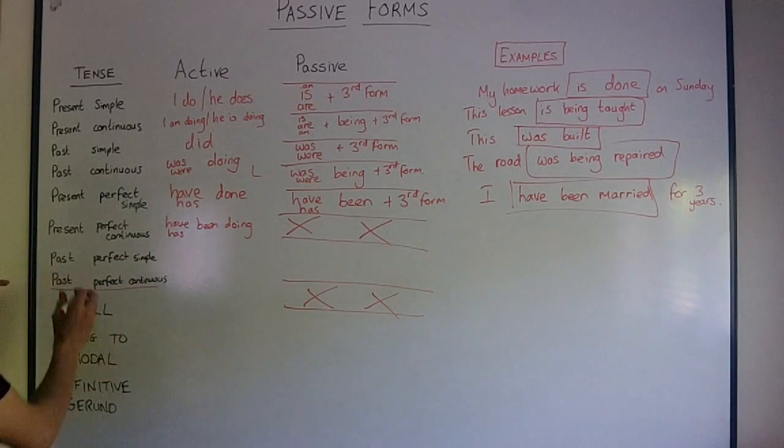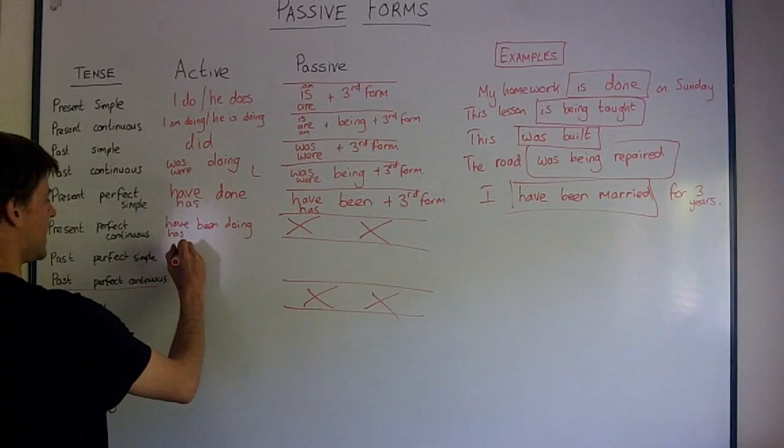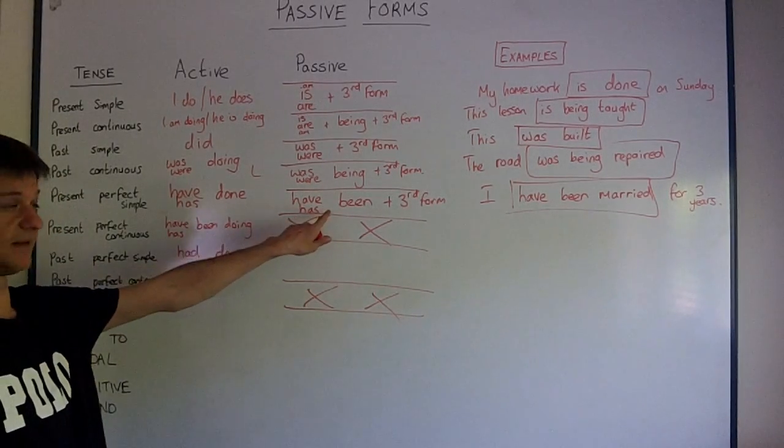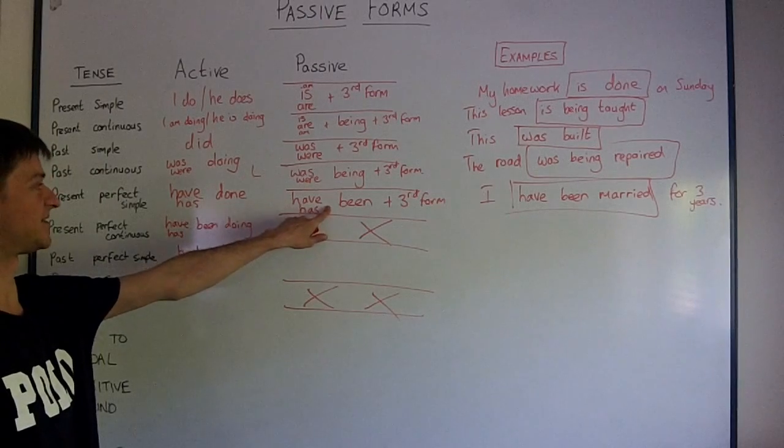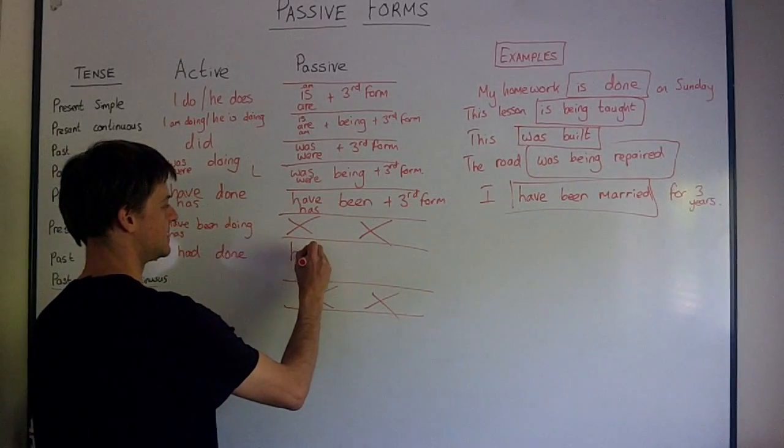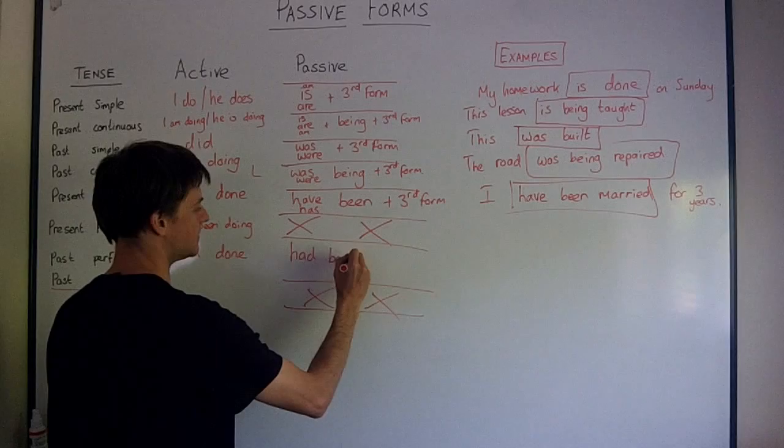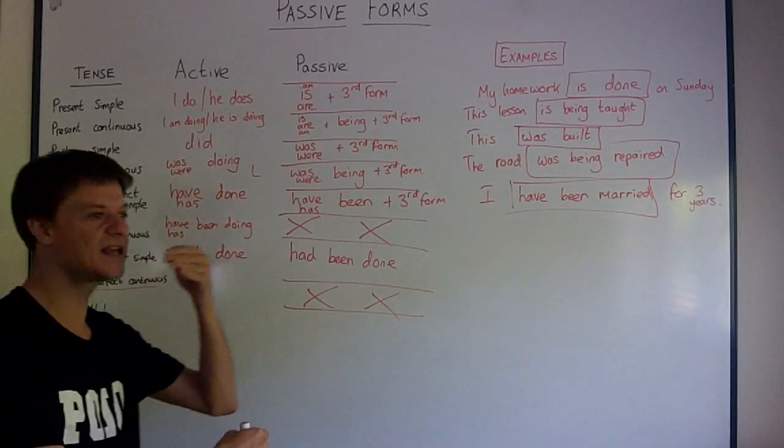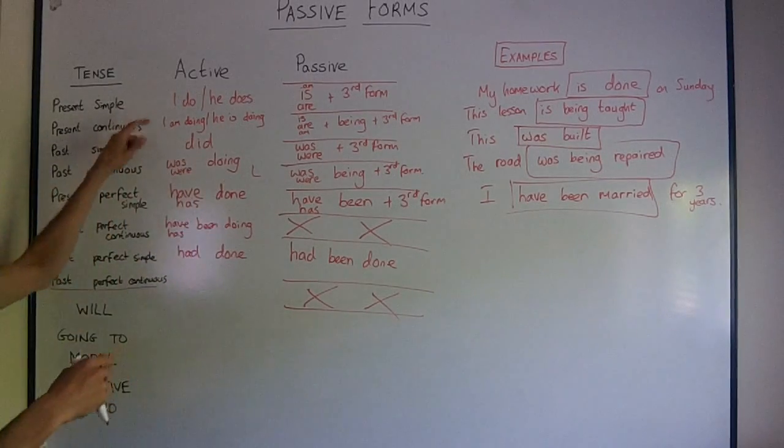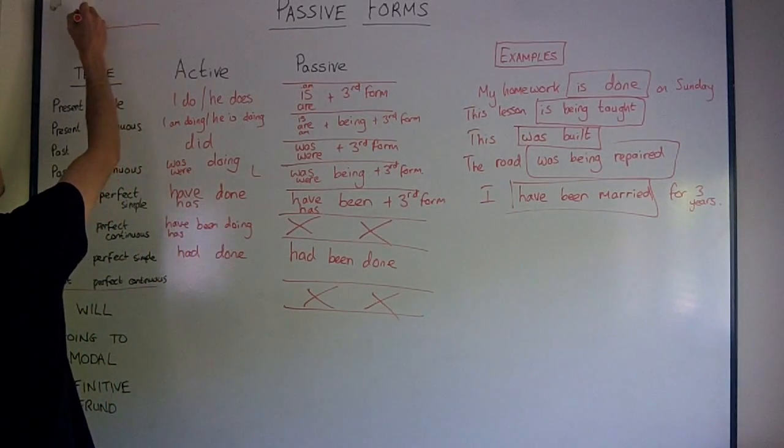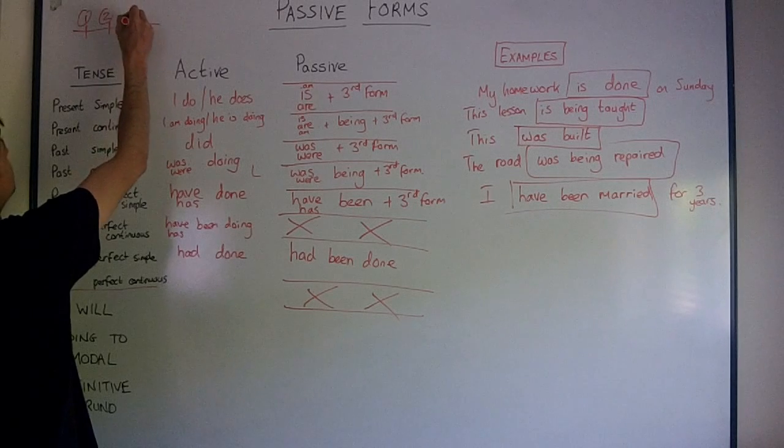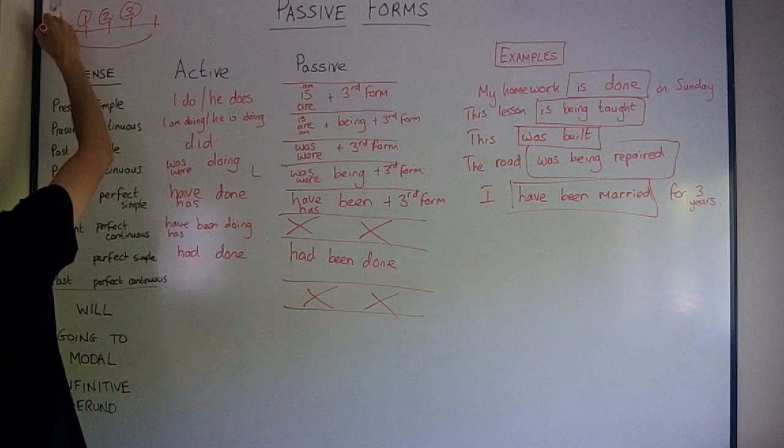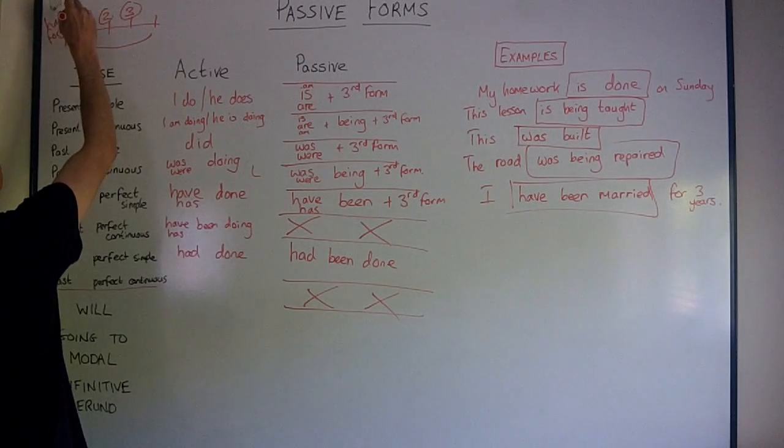Past perfect simple had plus third form done, had done. Well, it's a bit like present perfect passive. Past perfect passive would be had been done. Remember, we use this tense for when we're telling a story. We usually use past simple moments and we say, I woke up, I went to work, and then I found out that I had forgotten my keys. Had forgotten was earlier.